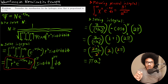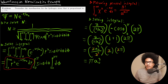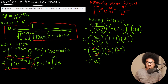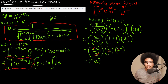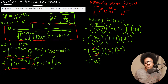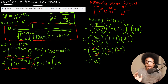We're not quite done yet — this is just the evaluation of the integral. The normalization constant N is equal to 1 over the square root of this integral result. So we take π a-naught³, put it under 1, take the square root, and that is our normalization constant. Our normalization constant is equal to the square root of 1 over π a-naught³.